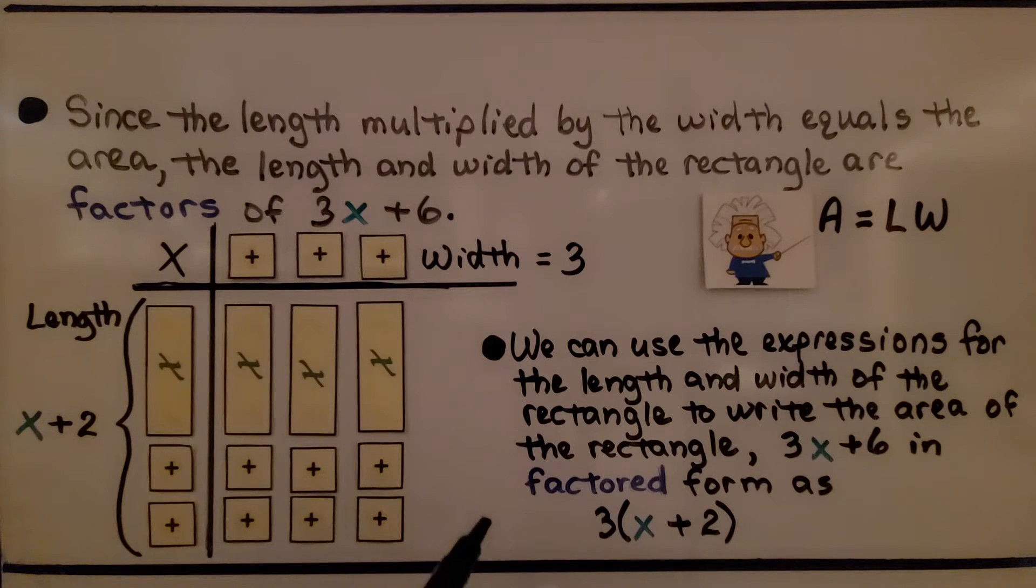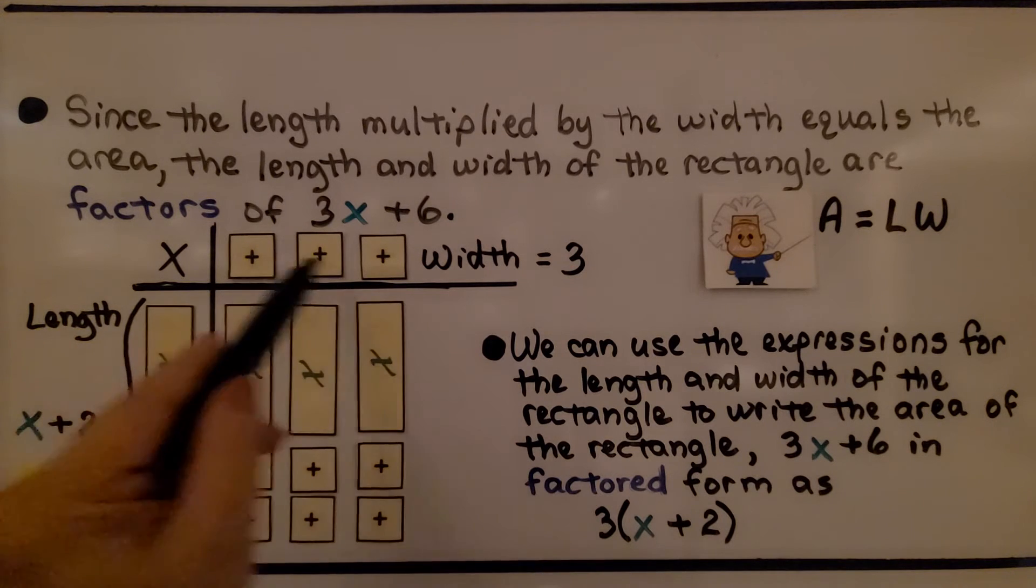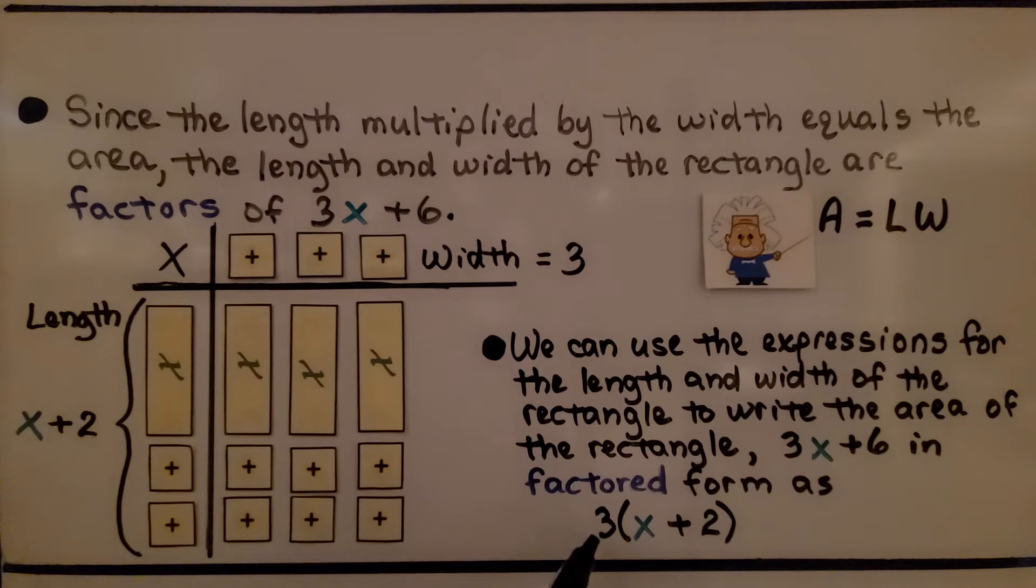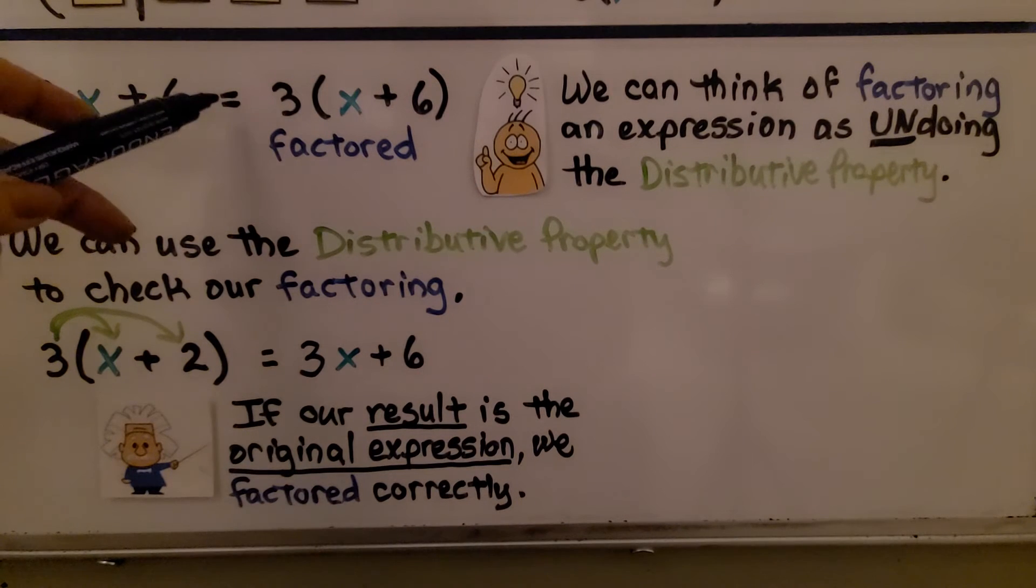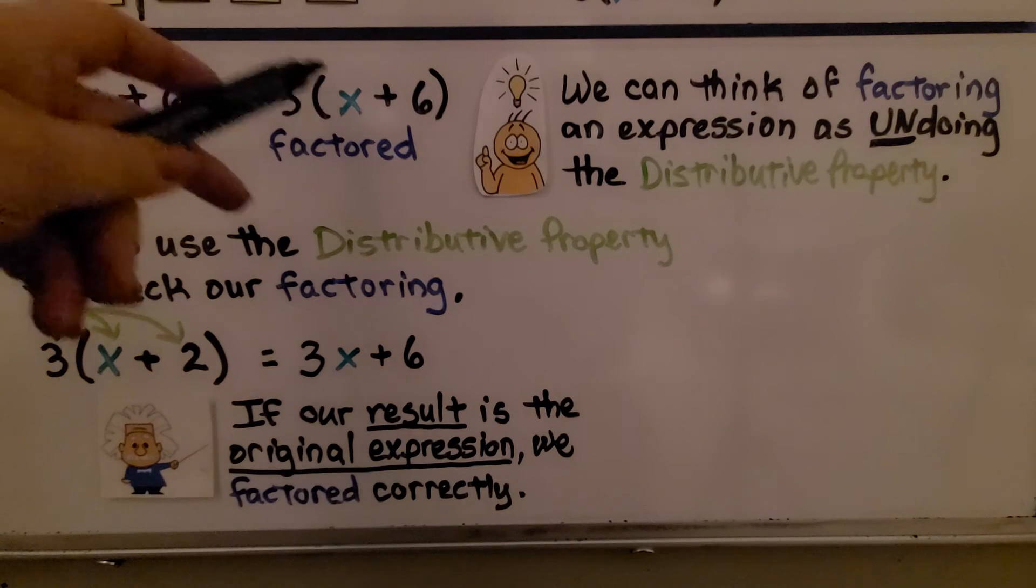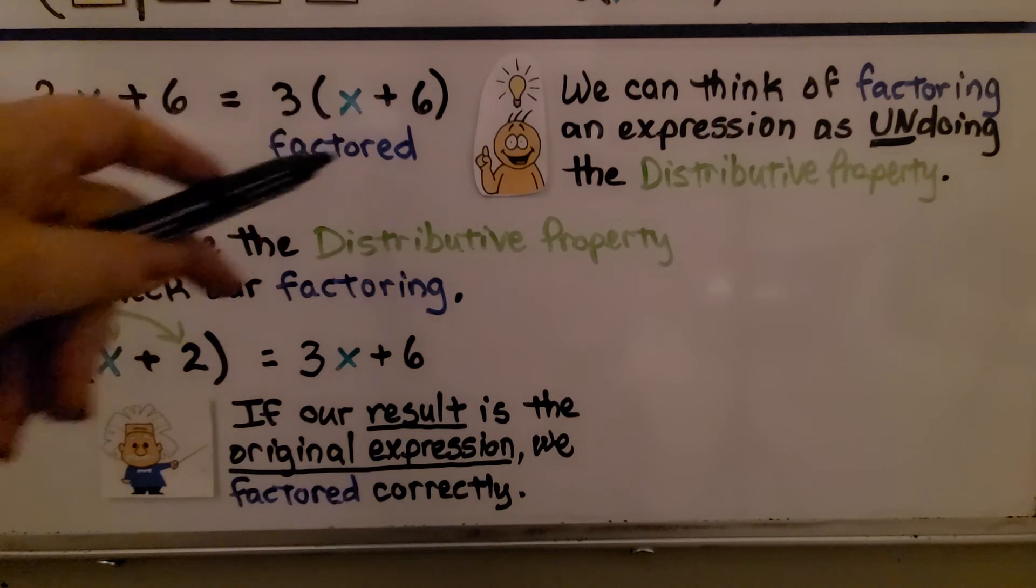We can use the expression for the length and width of a rectangle to write the area of the rectangle, 3x plus 6, in factored form as 3, that's the width, times (x plus 2). We have x plus 2, three times. So 3x plus 6 equals 3 times (x plus 2). Here it's factored.